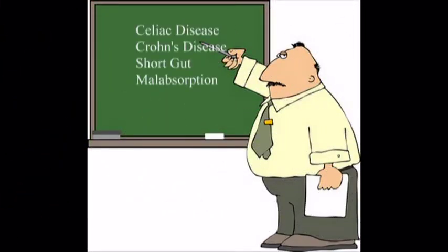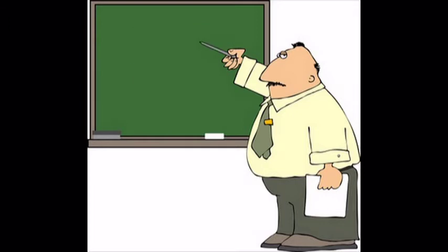If kids have malabsorption due to intestinal damage like celiac disease, Crohn's disease, short gut, or short bowel syndrome, you want a formula that is partially hydrolyzed to help with the digestion of proteins, and you want a certain amount of medium chain triglycerides since those are needed for absorption.